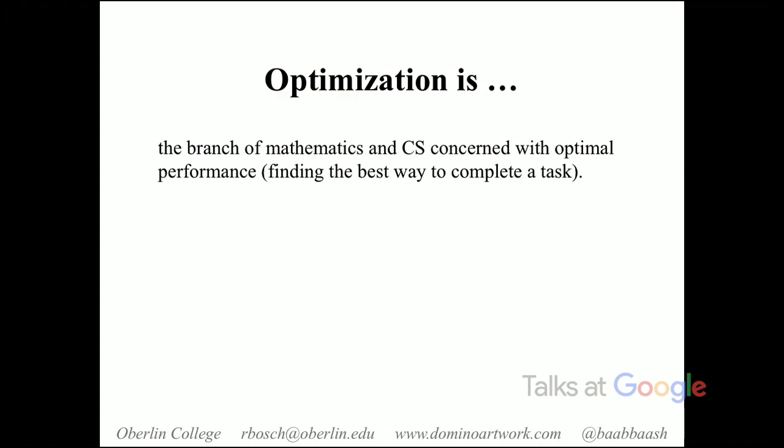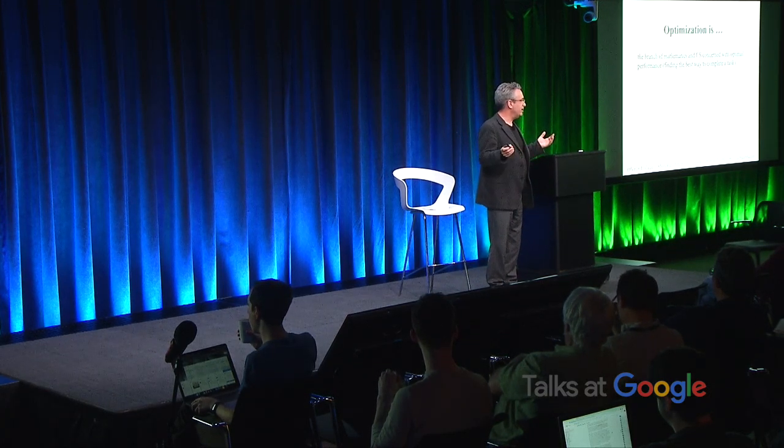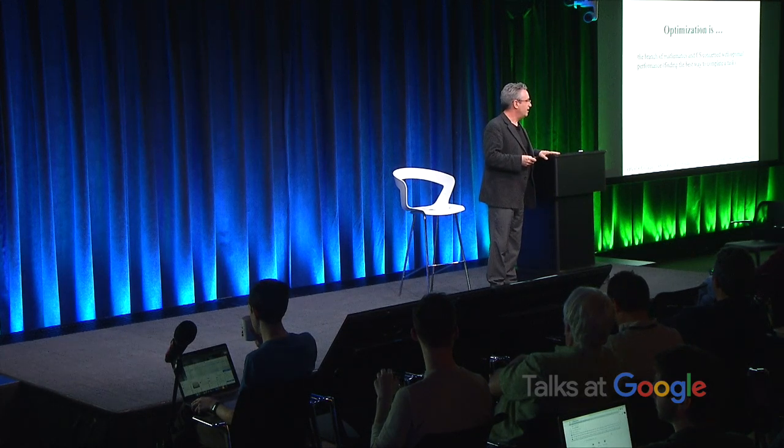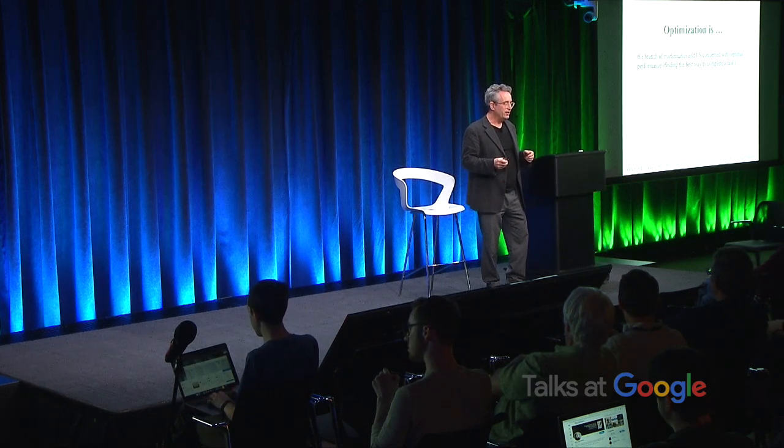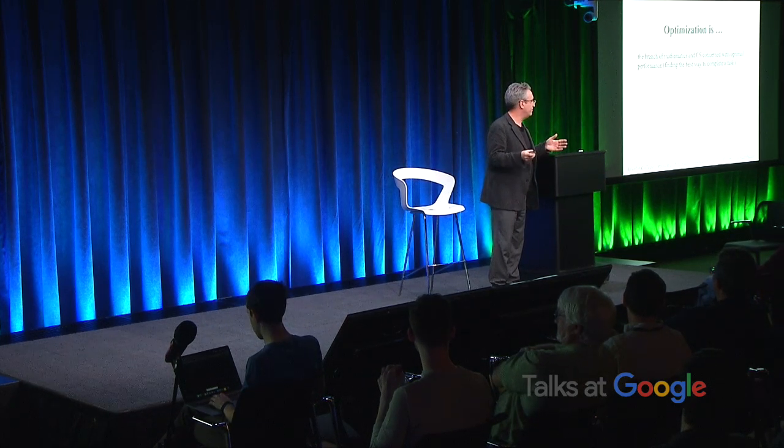Optimization is the branch of math and computer science that deals with optimal performance — trying to do some task as well as it can be done. It's an extremely applicable branch of mathematics and computer science, as all human beings are optimizers from time to time. We go out, run errands, and decide what order to do them — that's just one example. I started this whole work to try and convince students that optimization is broadly applicable, and thought, back around 2000, what better way than to show it could be used in visual arts, where they might not suspect it would have any use at all.